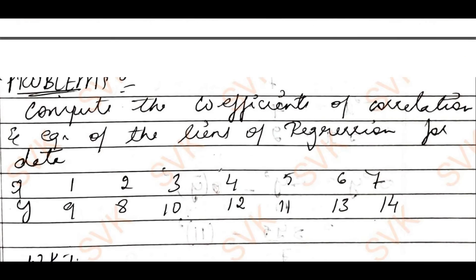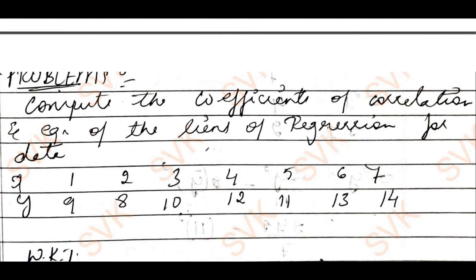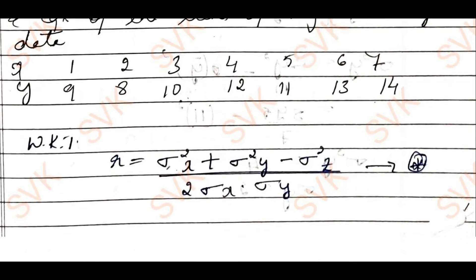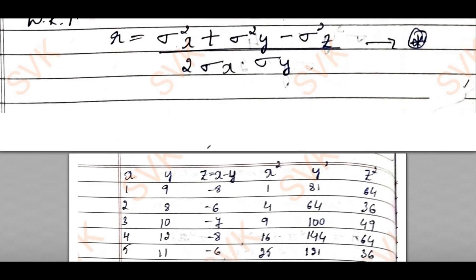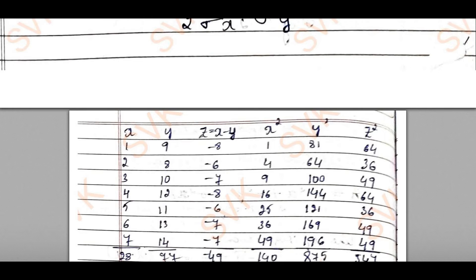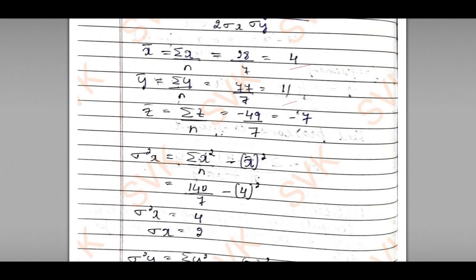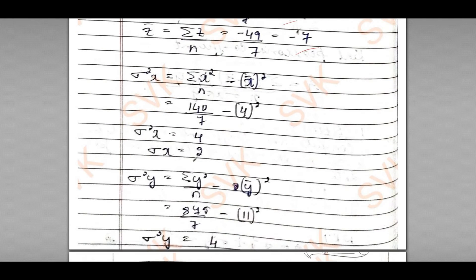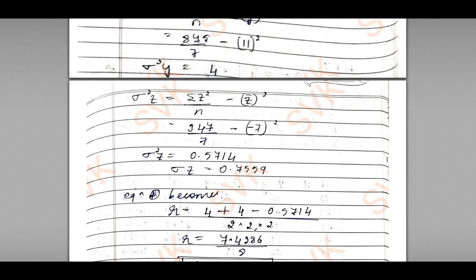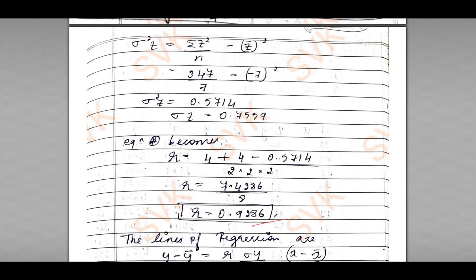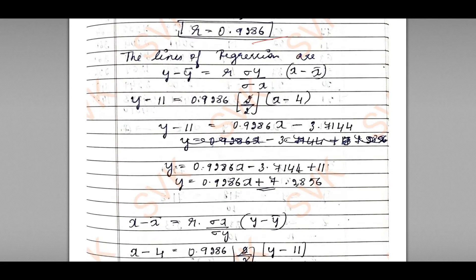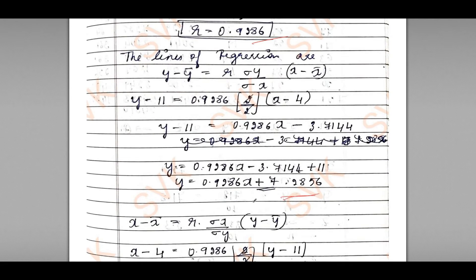Moving to the next problem: compute the coefficient of correlation and the equations of the lines of regression for the given data. Fetching the data, I find r — to find r I find σx², σy², tabulating x, y, z. I have explained this type of problem in my previous video. You get the mean of x, mean of y, mean of z, and σx, σy, σz. Using all these, r equals 0.9286.